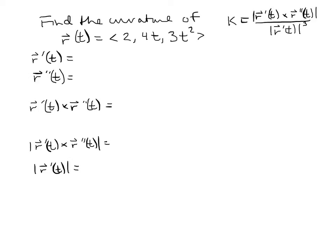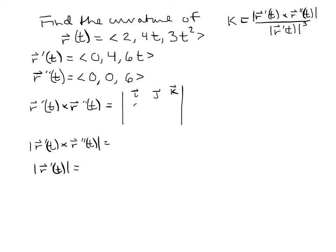Away we go. The first derivative: the derivative of the first component (implicitly 0) is 0, derivative of 4t is 4, and derivative of 3t² is 6t. The second derivative: 0, 0, 6. To find the cross product, we set up the matrix with i, j, k in the first row; 0, 4, 6t in the second row; and 0, 0, 6 in the third row.